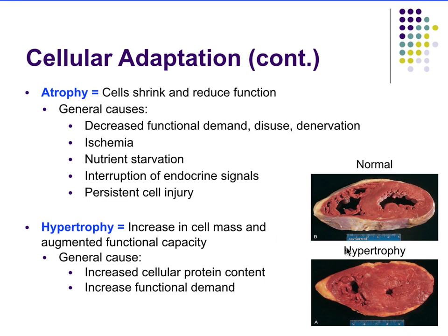Here we have an image of a normal heart — a cross-section showing the ventricles. Look at the muscular tissue around the left ventricle. Now here is the left ventricle with hypertrophy — you can see increased cell size and much more muscle mass. But this is not necessarily a good thing: the lumen of the ventricle is now much smaller, meaning you can't fill up with a lot of blood and therefore can't move as much blood.